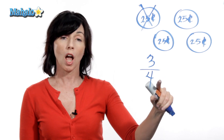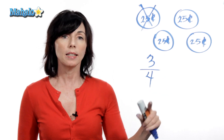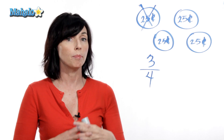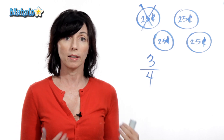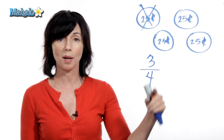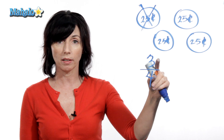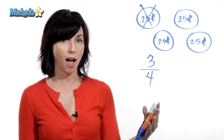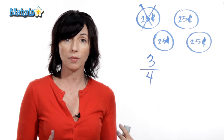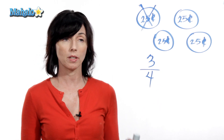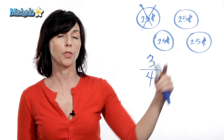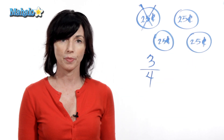The denominator, the number on the bottom, indicates how many pieces make up the whole thing. In my case, how many quarters made up my whole dollar. And the numerator, the number on the top, indicates how many parts of that I have left. So in my case, it represents the three quarters that I have left.